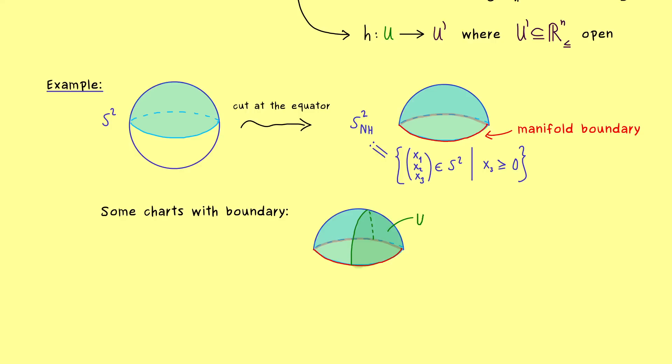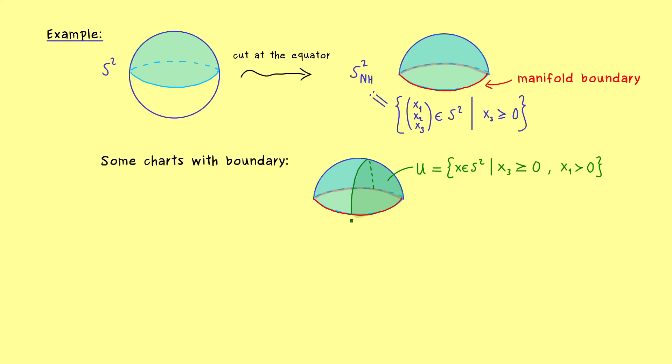So this is our set U, which we want to map homeomorphically to the half-space. And the best way to do that is to rotate the whole thing to just project it down.